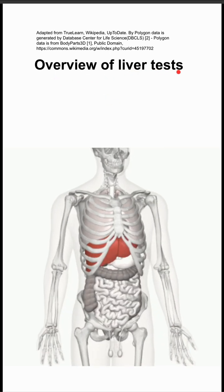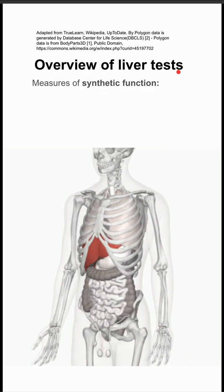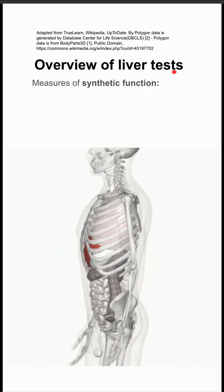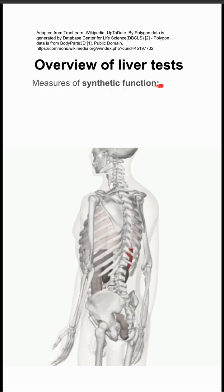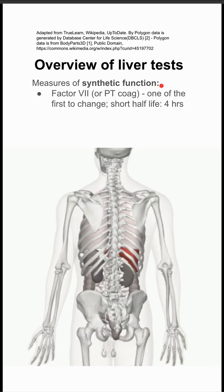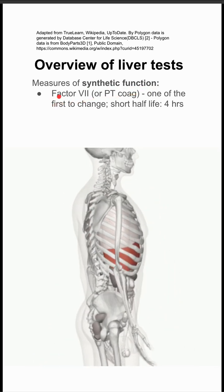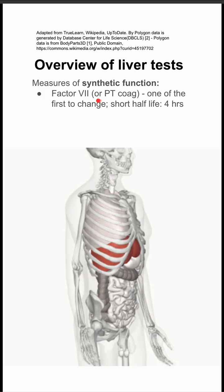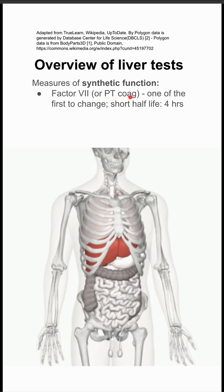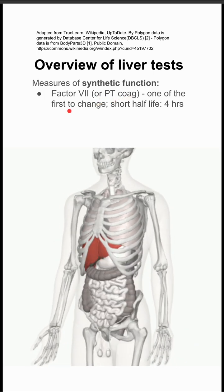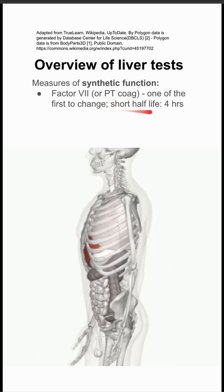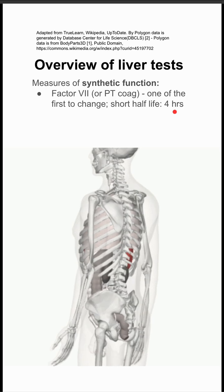This is an overview of liver tests. The first list of tests are those that measure synthetic function of the liver. The fastest one to change is Factor 7, or your PT in your coagulation studies. This is the first to change because it has a short half-life of four hours.